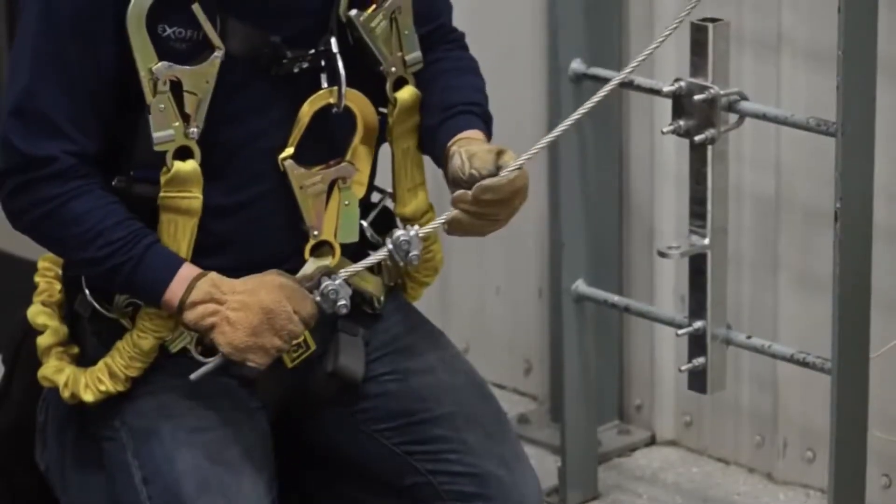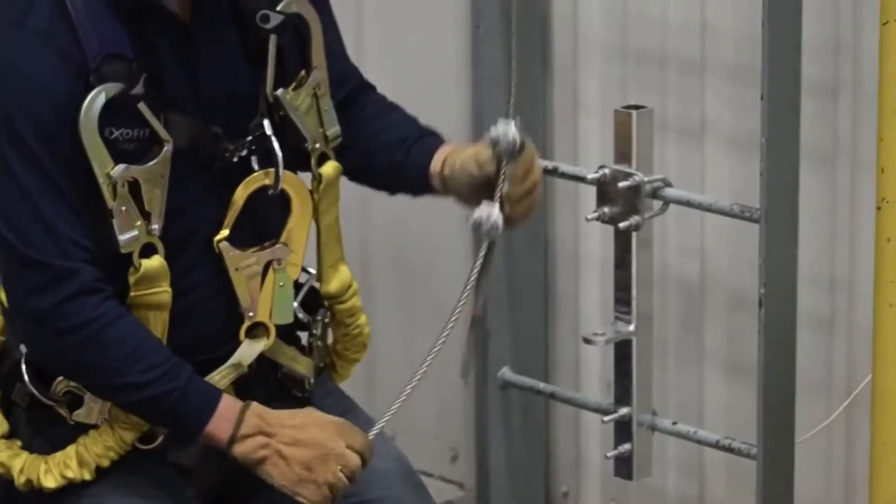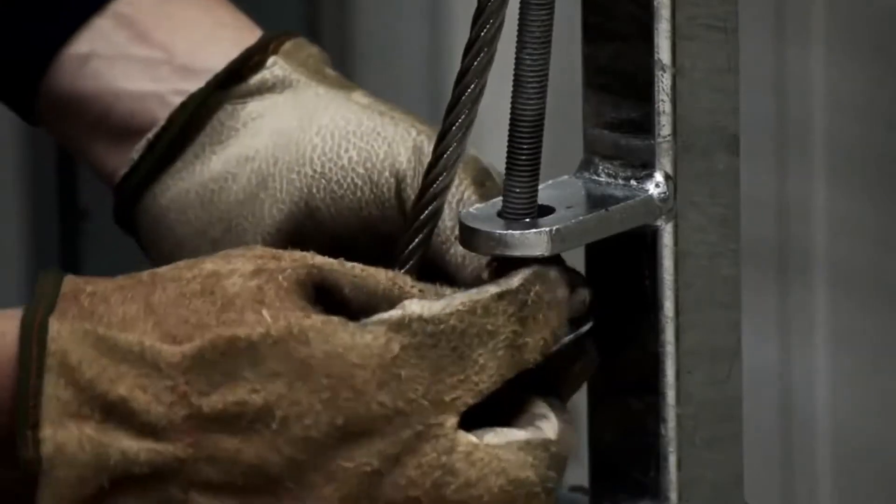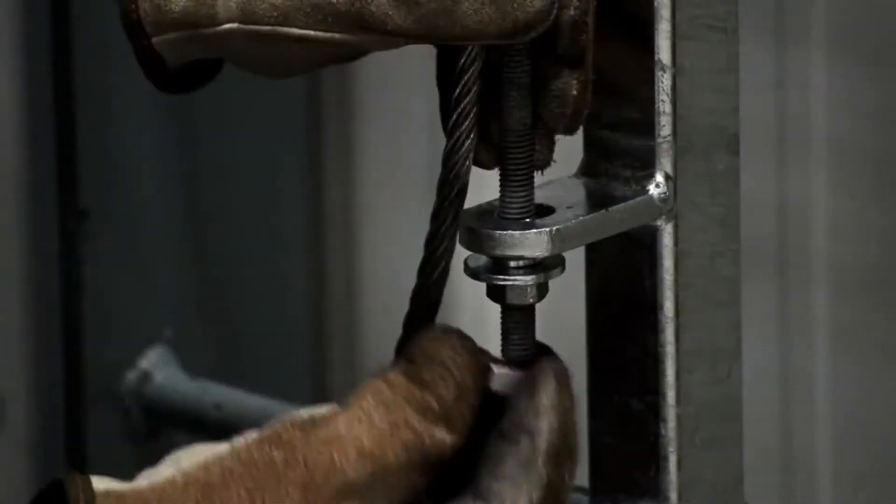Insert the cable through the top of the tension rod, with the saddle clips loosely against the cable. Slide the tension rod through the hole in the bracket. Add the washer and nuts to the bottom of the tension rod.